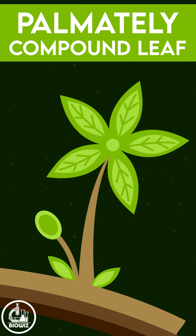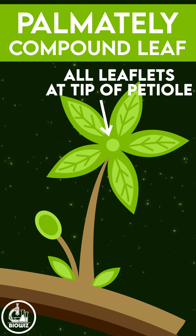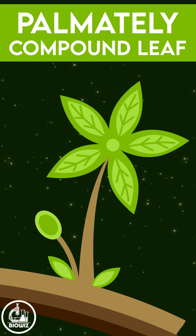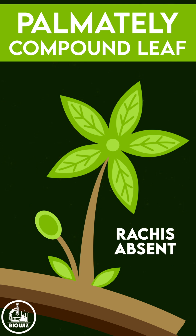In palmately compound leaves, the leaflets arise at a common point — that is, from the tip of the petiole. So in palmately compound leaves, the rachis is absent.